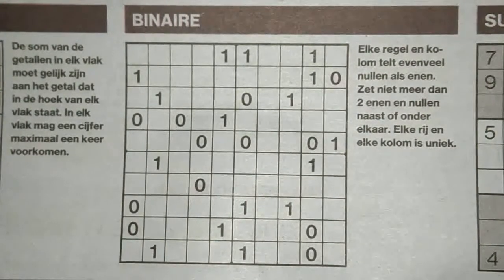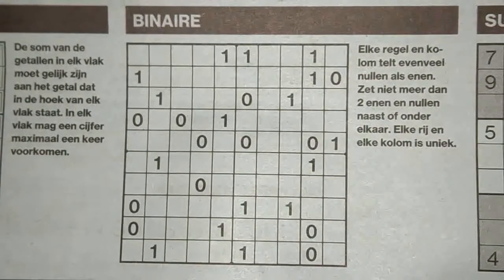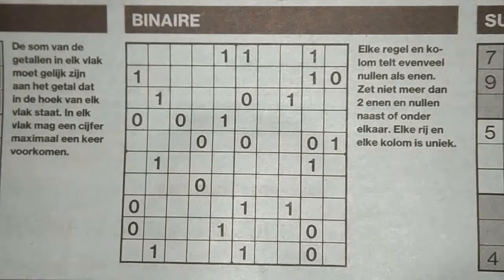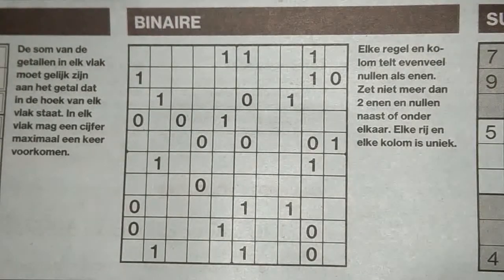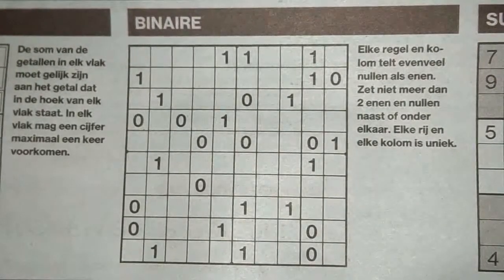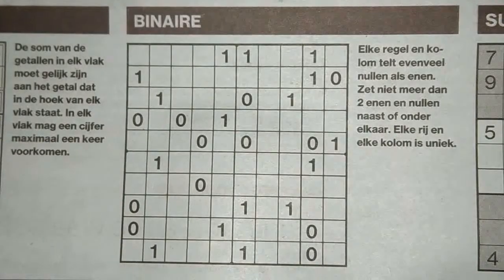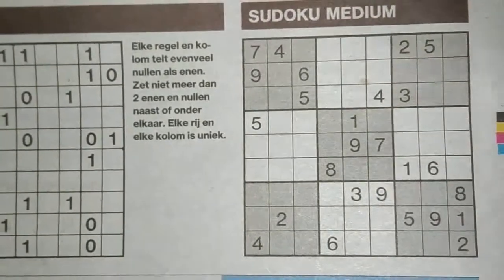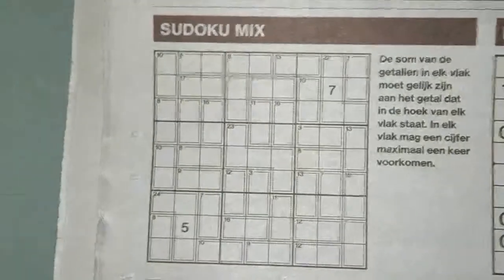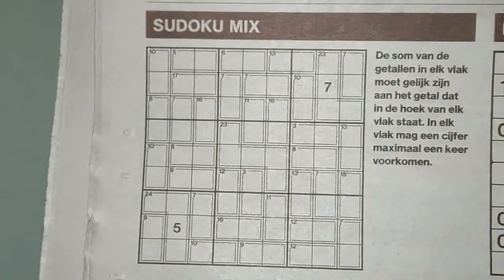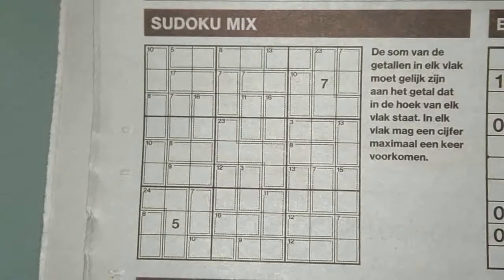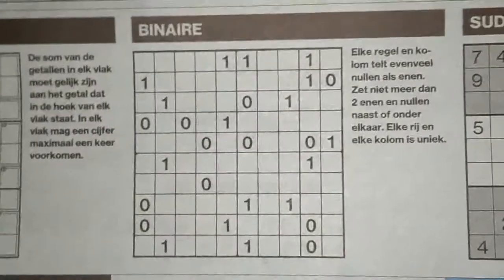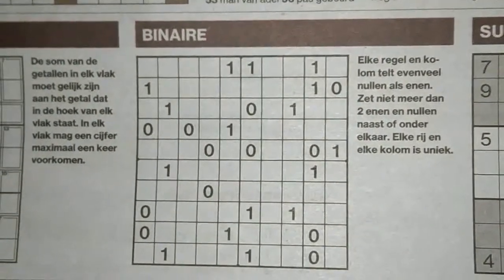Hi sudoku fans! Today in the Wednesday paper, the daily newspaper on April the 24th, we have three sudokus. One is a binary, the second one is a sudoku medium, and the third one is a sudoku killer or sudoku mix. Let's start with the binary.